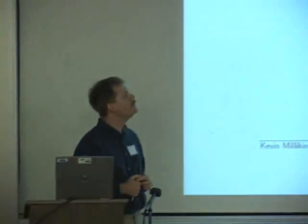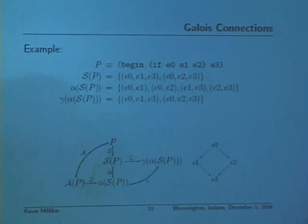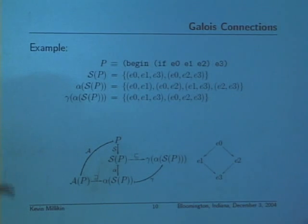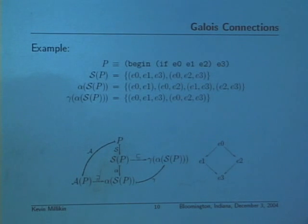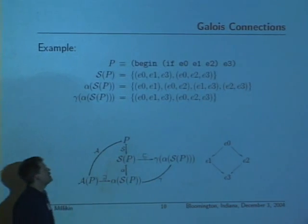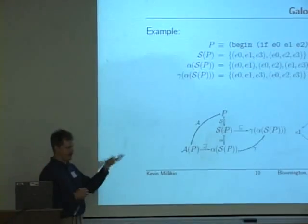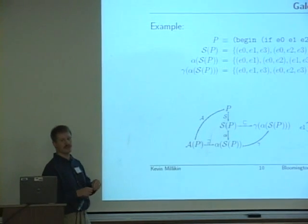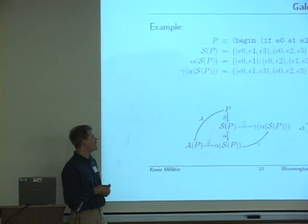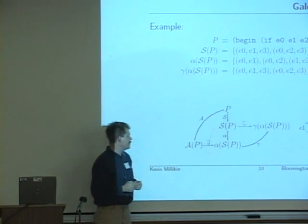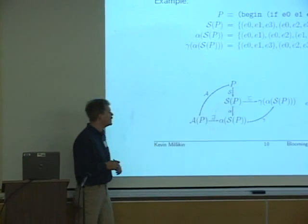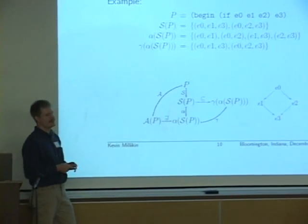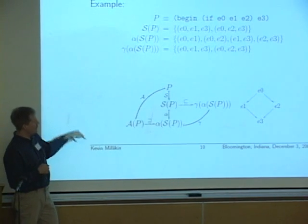Here's the example again. The semantics of the original program gives us a set of execution traces — two paths, corresponding to when E0 is true or false. Abstracting that gives us a set of edges where adjacent states in any execution trace become edges, forming the control flow graph. Concretizing gives back the set of all paths through that graph from entry to exit node. So S maps the program to its semantics, alpha abstracts it, and the analysis result is the best correct analysis — in practice slightly worse due to approximations.